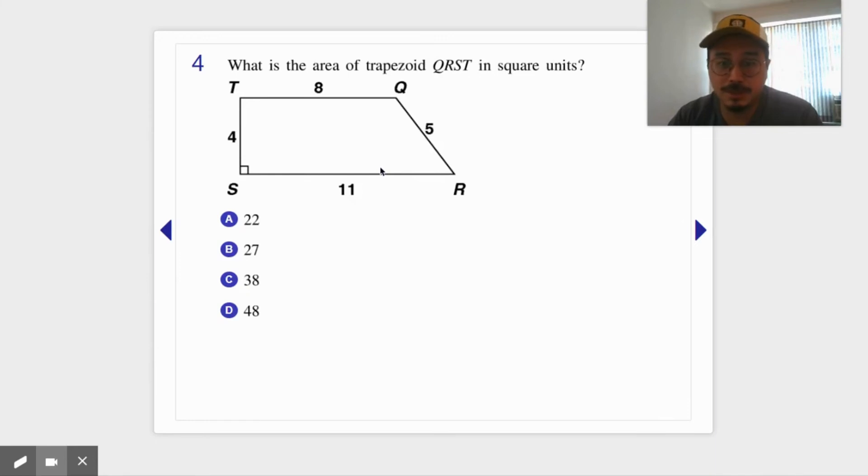Same thing. 8 plus 11, that's 19 times 4. By the way, this 5 here - not useful. Doesn't help you at all, so do not use that 5. Divided by 2, that's 38.